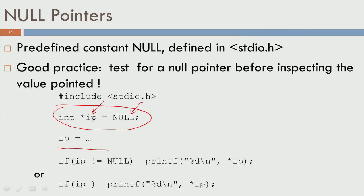You may do ip equals address of something later. The tip is: if ip is not equal to null, then printf star ip. What this does is check whether ip is null or not. If it was initialized to null and at this point ip is not equal to null, then there was a valid assignment to ip. If there is no valid assignment, ip will still remain null and you will not print the value. We will see how this is useful when we do dynamic memory allocation, specifically when we use malloc.